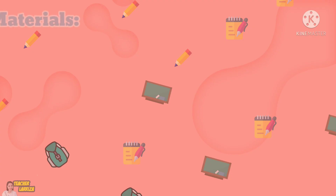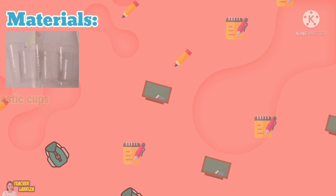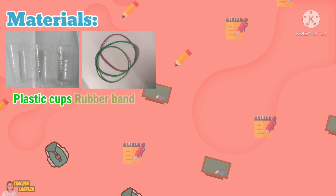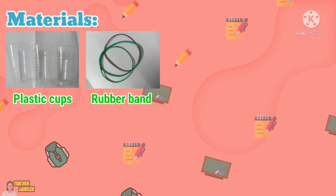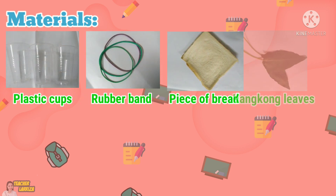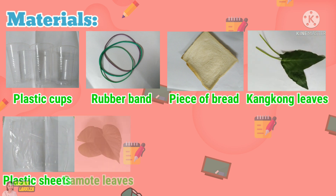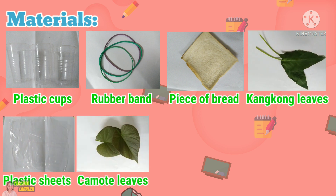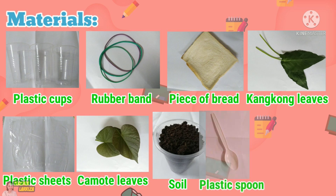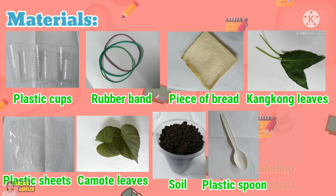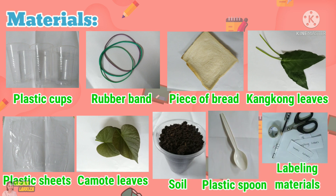Here are the materials that we are going to use in this experiment. We have plastic cups, rubber band, piece of bread, kangkong leaves, plastic sheets, kamote leaves, soil, plastic spoon, and labeling materials.